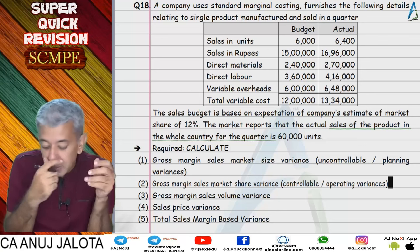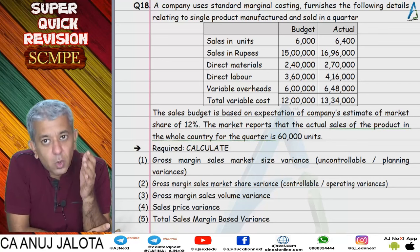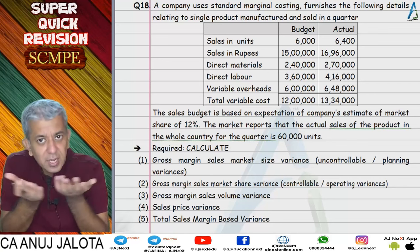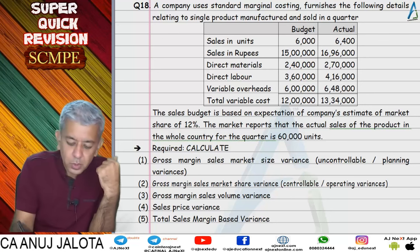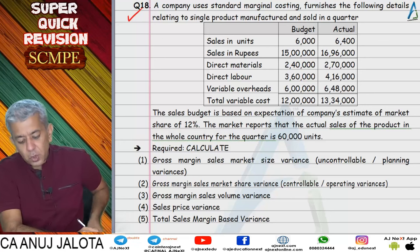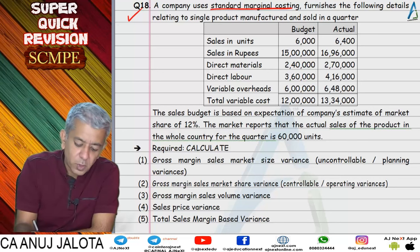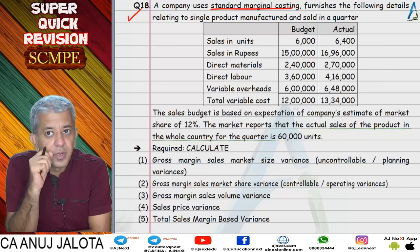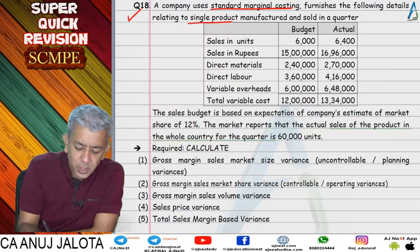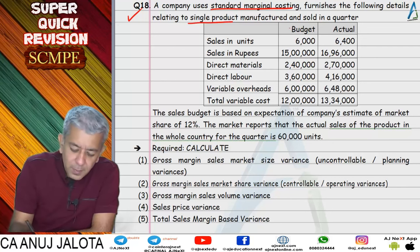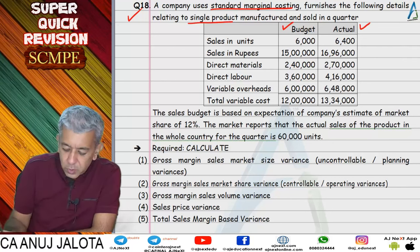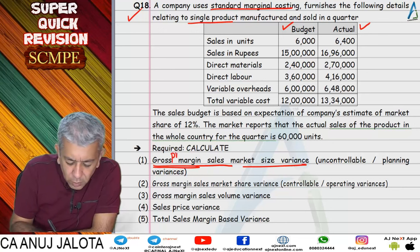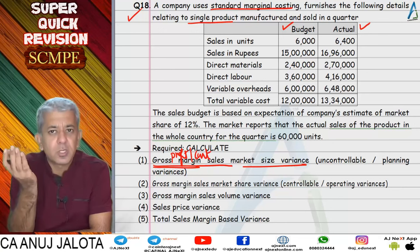Let's start with question number 18. In standard costing, all these questions are consolidated questions requiring you to analyze entire knowledge and reach a conclusion. Question 18 was about a company following standard marginal costing — profit per unit concept — with a single product. So profit mix and sales mix will become zero. Budgeted data and actual data were given, and you had to compute four types of variances: gross margin sales market size variance, and gross margin here means profit — which in marginal costing means contribution.